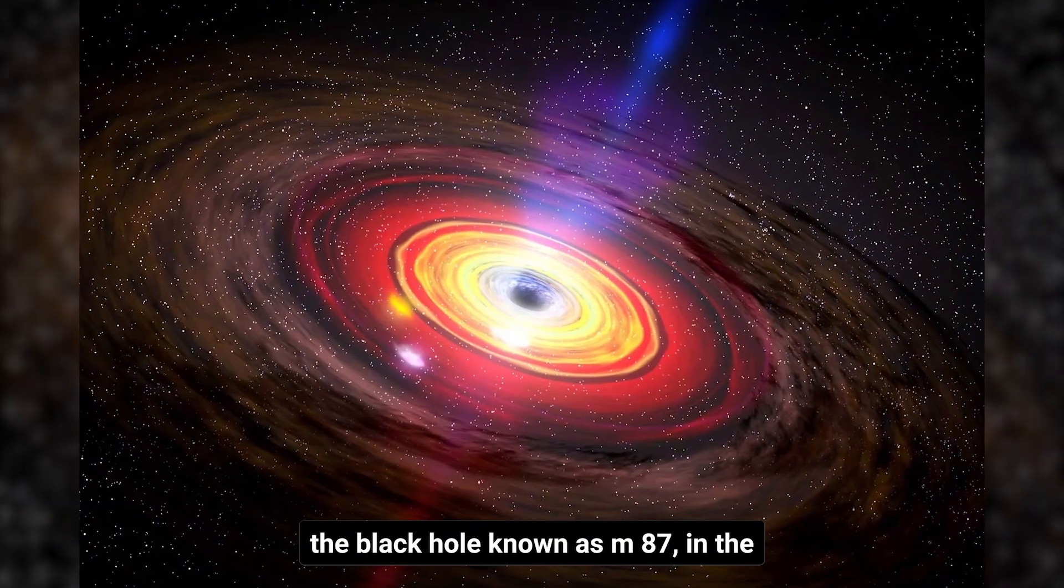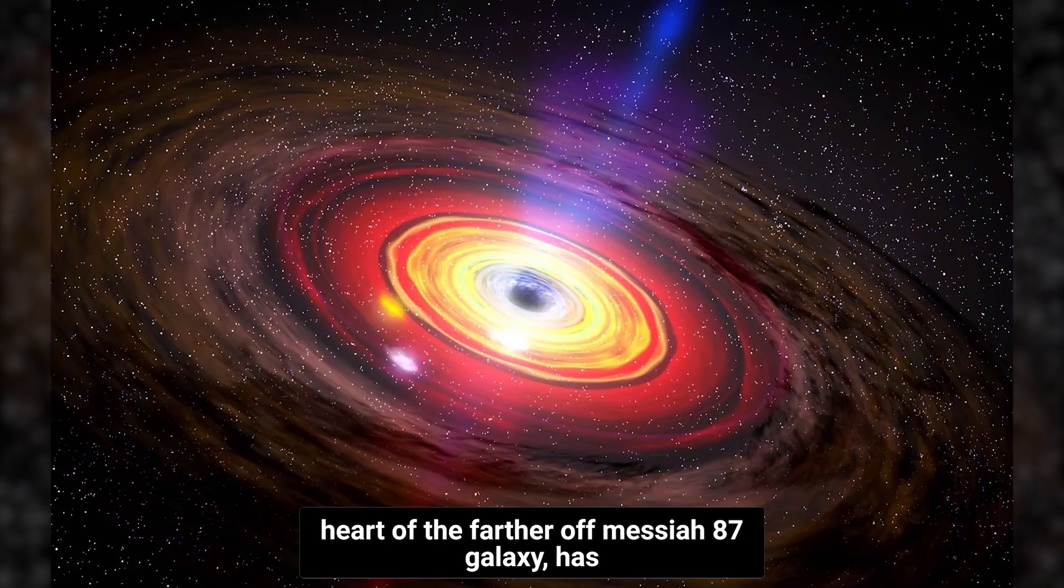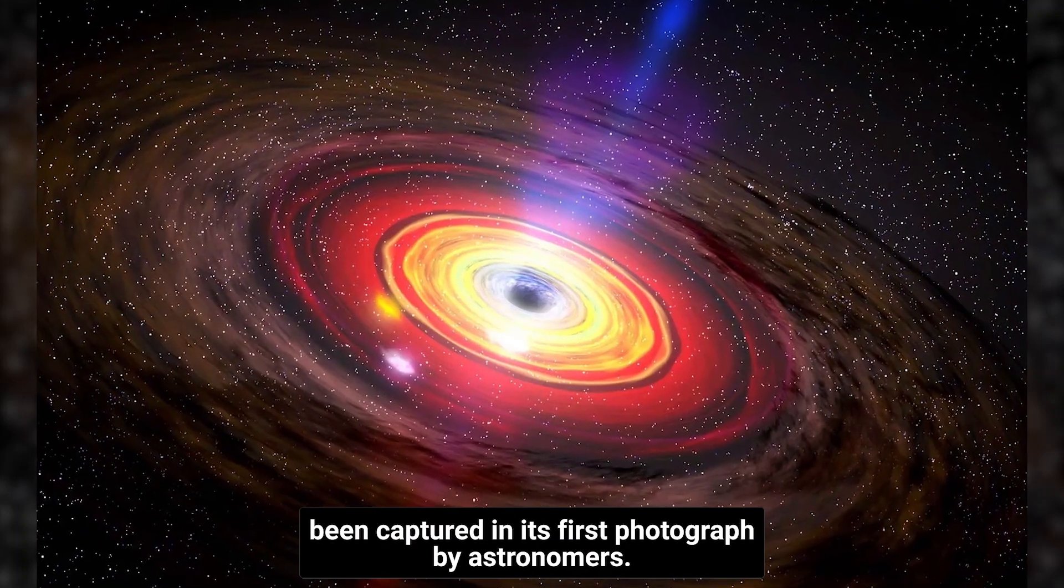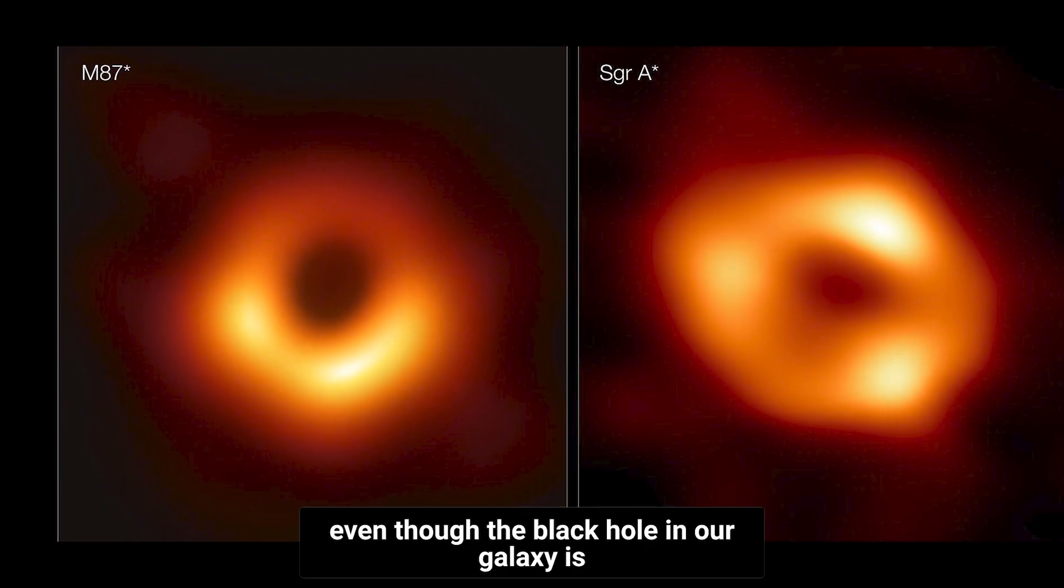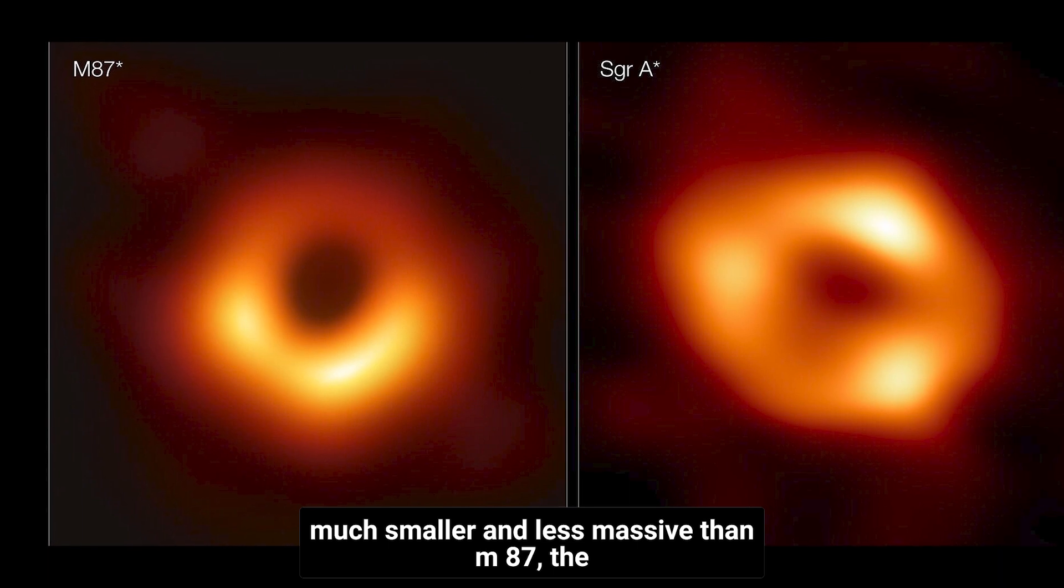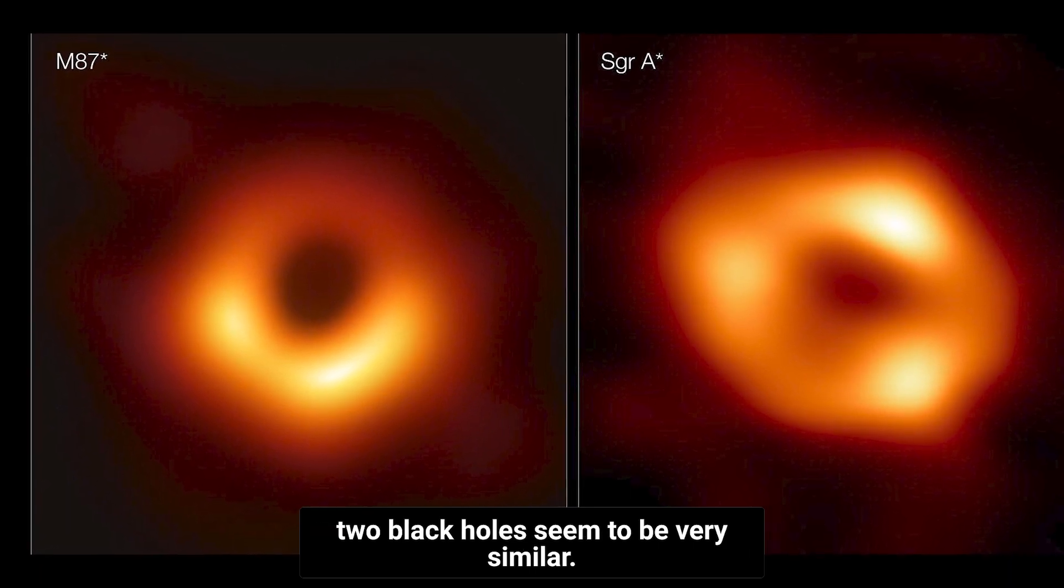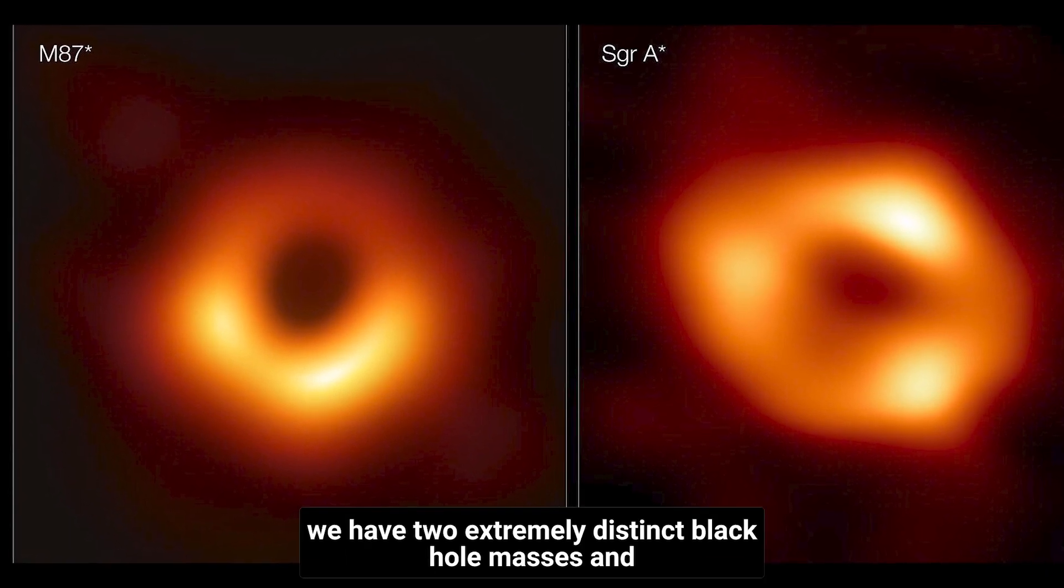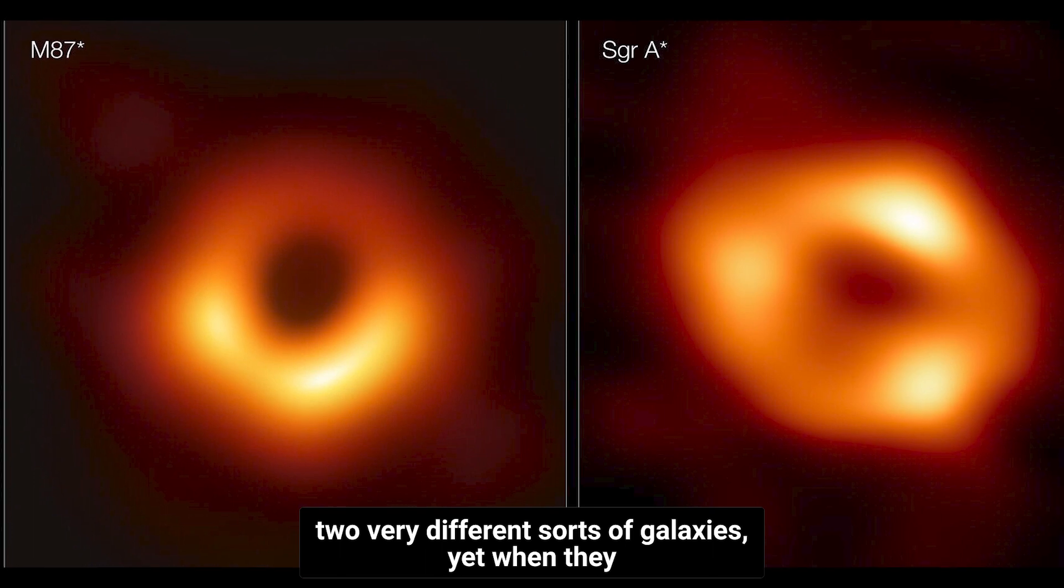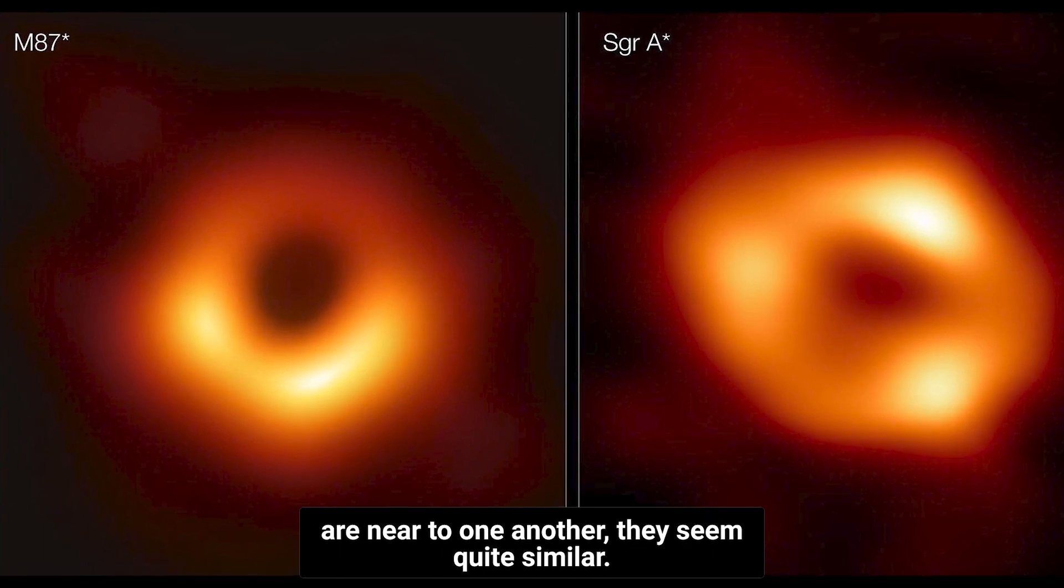The black hole known as M87 in the heart of the farther-off Messier 87 galaxy has been captured in its first photograph by astronomers. Even though the black hole in our galaxy is much smaller and less massive than M87, the two black holes seem to be very similar. We have two extremely distinct black hole masses and two very different sorts of galaxies, yet when they are near to one another, they seem quite similar.